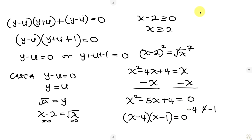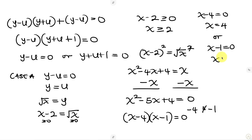From the first factor, x - 4 = 0 gives x = 4. From the second, x - 1 = 0 gives x = 1. But recalling our condition that x must be 2 or above, and 1 is clearly less than 2, we reject x = 1. So x = 4 is the real solution from Case A.